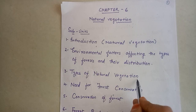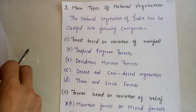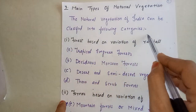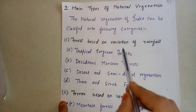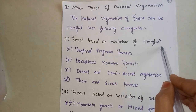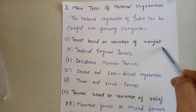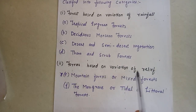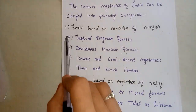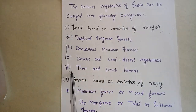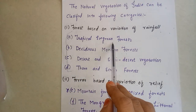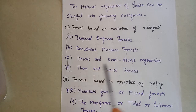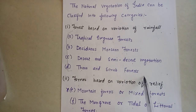We are on the third point now. The natural vegetation of India can be classified into two categories: first, based on variation of rainfall, and second, based on variation of relief. We completed the first part: tropical evergreen forest, deciduous monsoon forest, desert and semi-desert vegetation, and thorn and scrub forest.